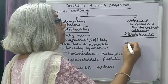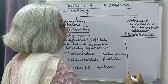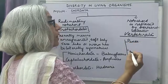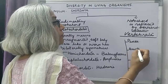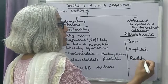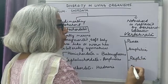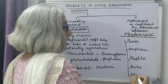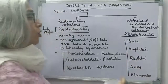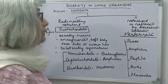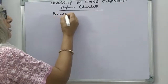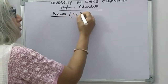Vertebrata has been divided into five classes: Pisces, Amphibia, Reptilia, Aves (birds), and Mammalia. We will discuss the features of each subgroup in detail. Pisces are the fishes, and they are exclusively aquatic, found in water.